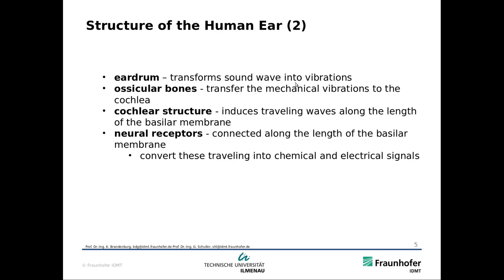The eardrum transforms sound waves into vibrations. Then the ossicular bones transfer the mechanical vibrations to the cochlea — like a gearbox in a car from the engine to the wheels, ensuring the right torque and speed. Inside the cochlea, there are traveling waves along the length of the basilar membrane. Neural receptors connected along the basilar membrane convert these traveling waves into chemical and electrical signals transmitted to the brain. Depending on where we have the resonance, we get stronger outputs towards the brain.